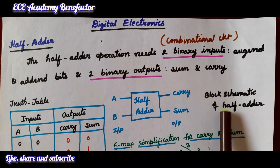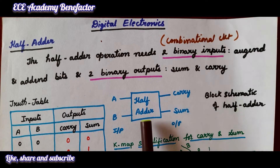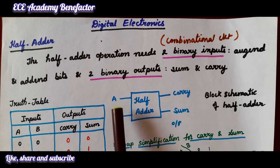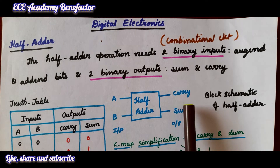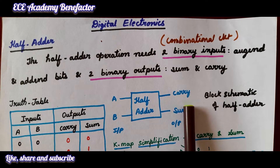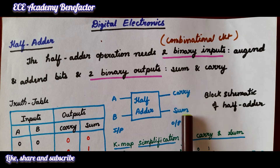Coming to the block schematic of half adder, the half adder has two binary inputs A and B, and two binary outputs — carry and sum.